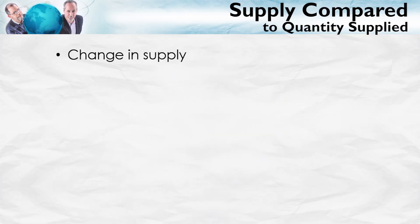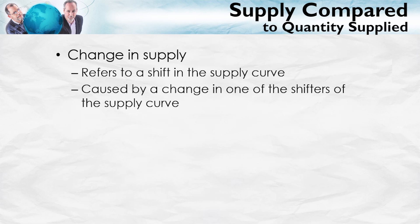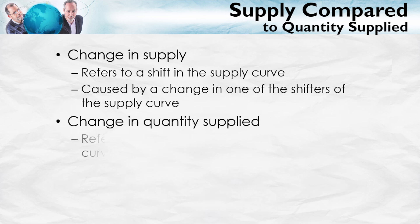A change in supply refers to a shift in the entire supply curve, caused, as we know, by a change in costs, such as a change in technology or input prices and so forth. A change in the quantity supplied refers to a movement along a fixed supply curve, caused by a change in the price.